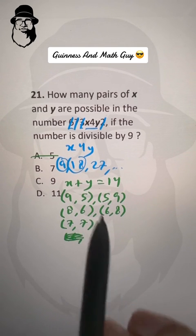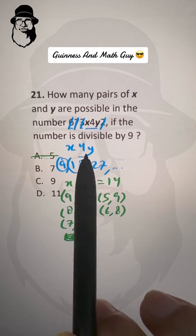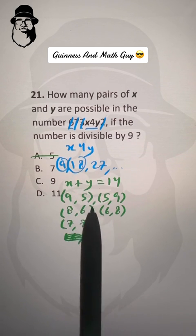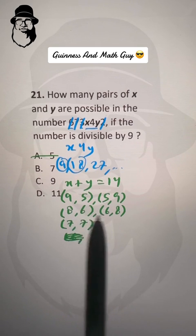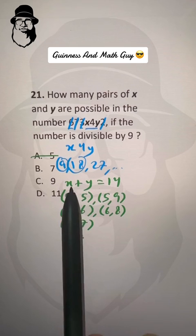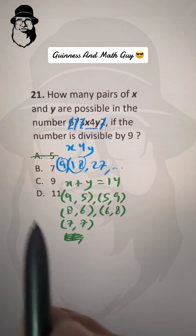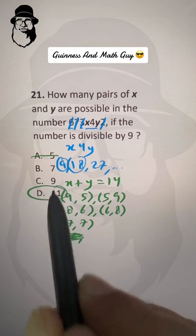We had 6 options, 6 choices when X plus Y was 5 and we have 1, 2, 3, 4, 5 options here where X plus Y is 14. So 6 plus 5 is 11. That's our answer. Choice D.